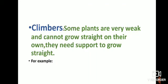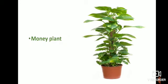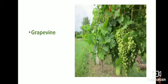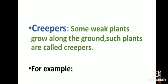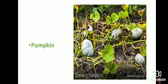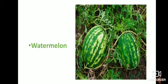Climbers: Some plants are very weak and cannot grow straight on their own. They need support to grow straight. For example, money plant and grapevine. Creepers: Some weak plants grow along the ground. Such plants are called creepers. For example, pumpkin — that is the picture of pumpkin — and watermelon.